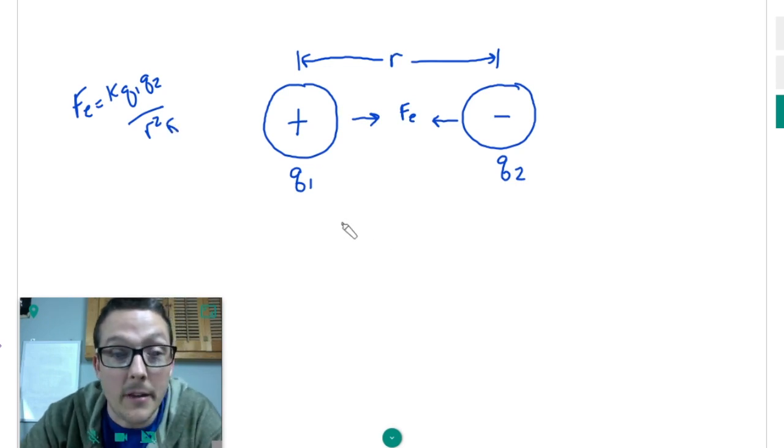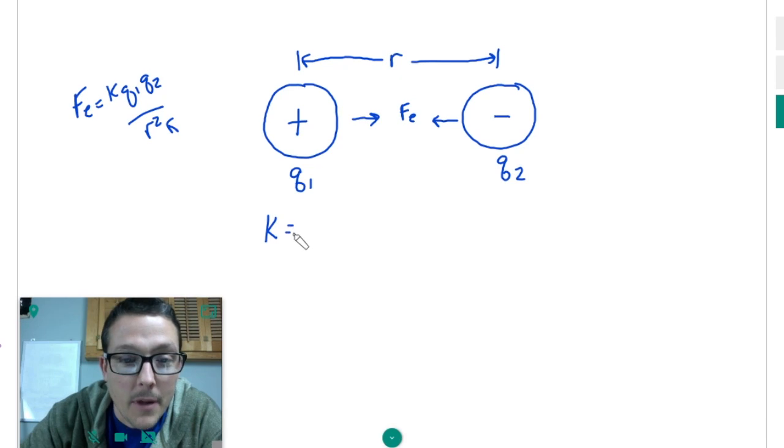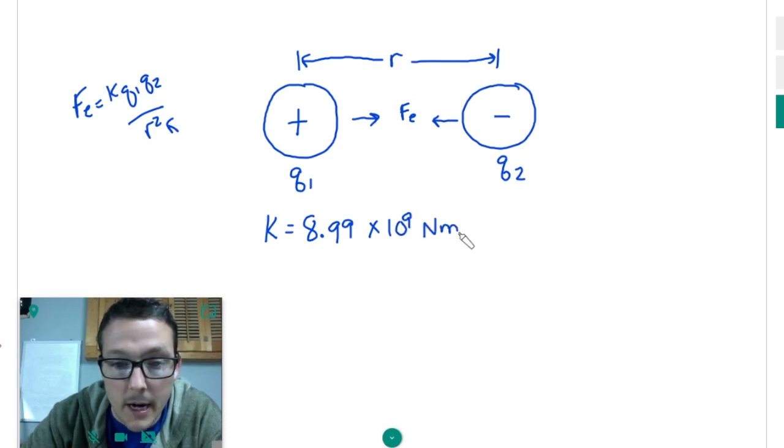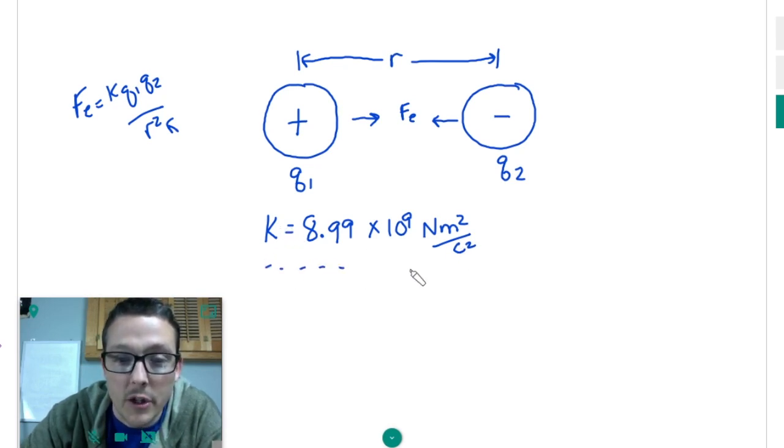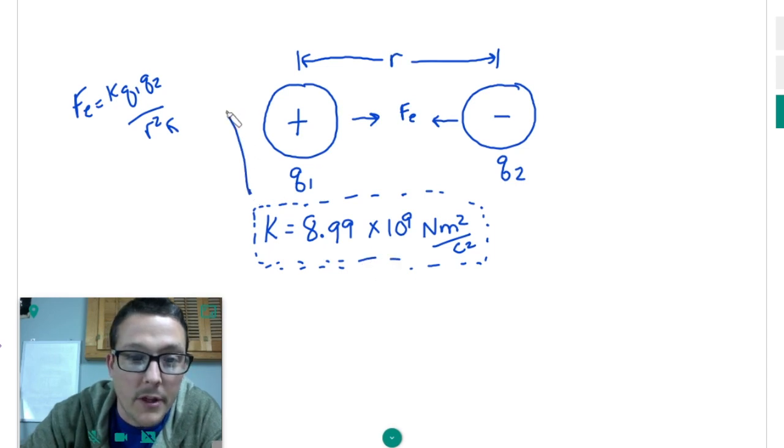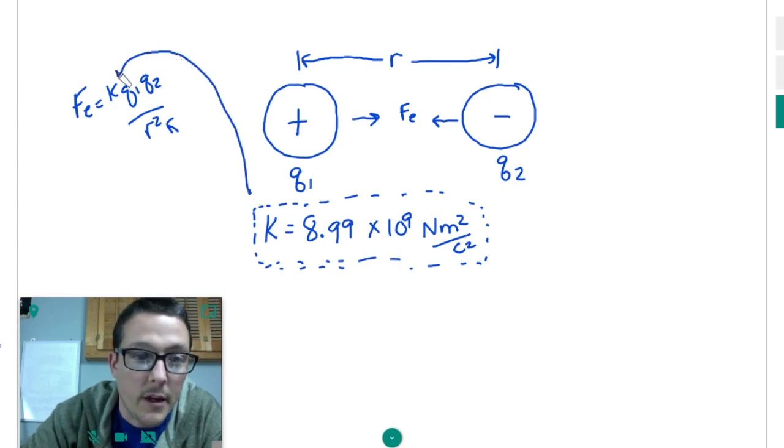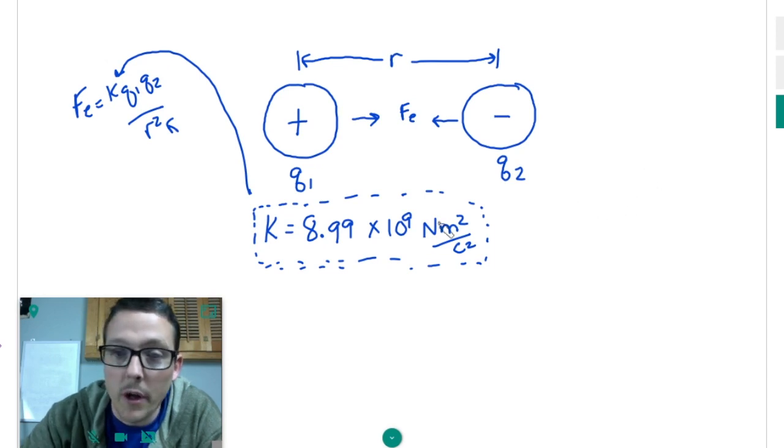The only thing that's going to be missing now is this K. Now K has a value of 8.99 times 10 to the ninth Newtons times meters squared divided by Coulomb squared. And just remember, guys, just because this is a long, annoying unit does not mean that you do not have to write it when you're showing work. And this right here is going to be the electrostatic constant. So this value right here, depending on your reference table or what you're using, this value is going to go in for this every single time.